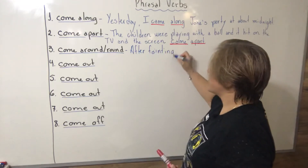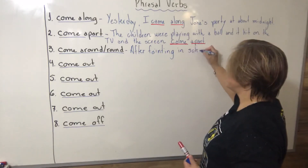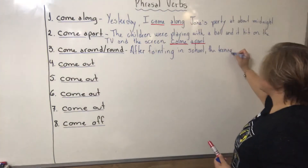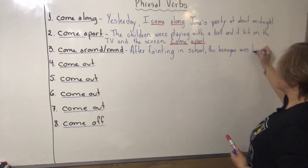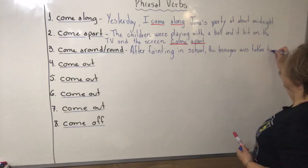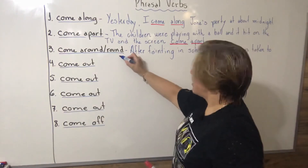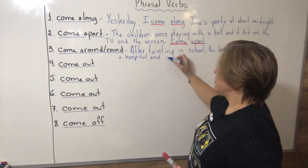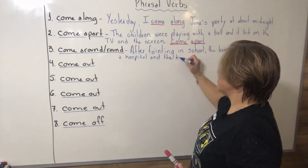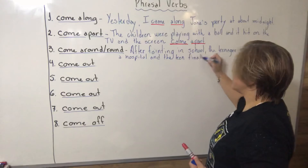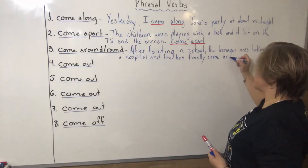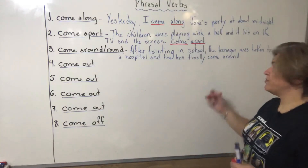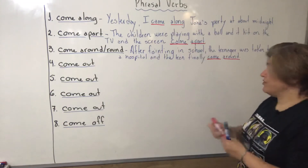Here is the example sentence being written: 'After fainting in school, the teenager was taken to a hospital, and the teenager finally came around.' So that is the phrasal verb 'came around' used in context.